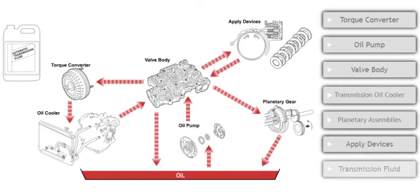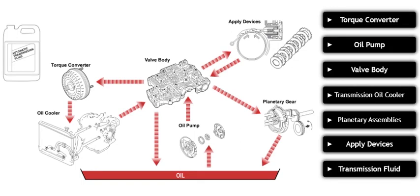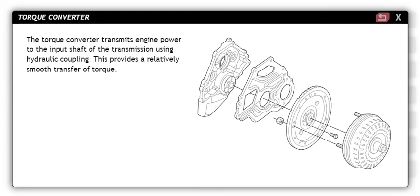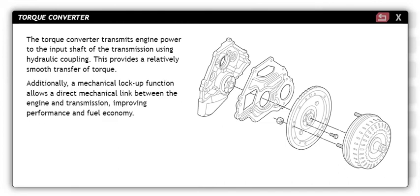Let's look closely at the basic components of an automatic transmission and transaxle. The torque converter transmits engine power to the input shaft of the transmission using hydraulic coupling, which provides a relatively smooth transfer of torque. Additionally, a mechanical lock-up function allows a direct mechanical link between the engine and transmission, improving performance and fuel economy.